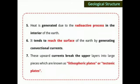The crust of the earth floats over the semi-liquid rocks of the asthenosphere. When heat is generated due to the radioactive process in the interior of the earth, it reaches the surface by generating convectional currents. When more pressure is generated inside the earth, that pressure tries to move outward and upward, generating more heat and more convectional currents.